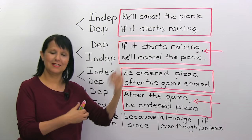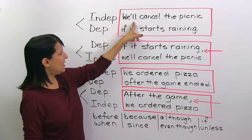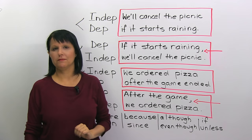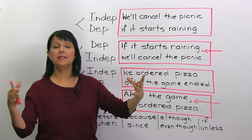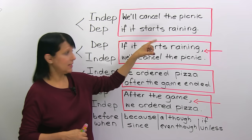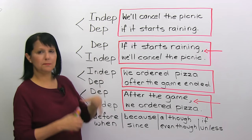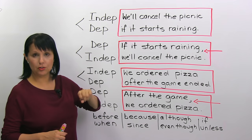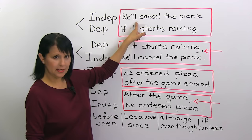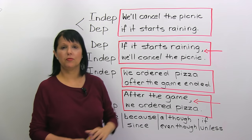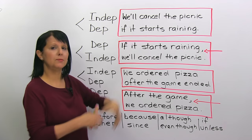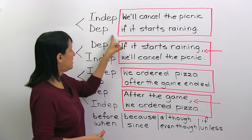Let's look at an example. If I say 'we'll cancel the picnic,' that's a sentence by itself — it makes sense, it's a complete thought, so that is an independent clause. If I say 'if it starts raining' — if it starts raining, what? Because that's incomplete, that is a dependent clause. In a complex sentence, we see an independent clause and at least one dependent clause.